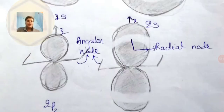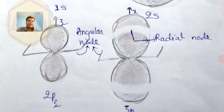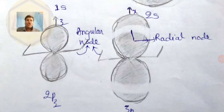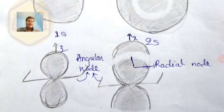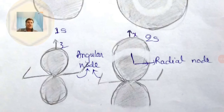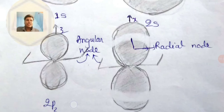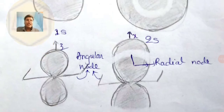For 2pz, angular nodes = l = 1 for all p orbitals regardless of principal quantum number. So all p orbitals have exactly one angular node or nodal plane. For 2pz, the lobes are along the z axis, so the plane perpendicular to z — the xy plane — serves as the angular node or nodal plane, where electron density is zero. Radial nodes = n - l - 1 = 2 - 1 - 1 = 0. So 2p orbitals have no radial nodes.